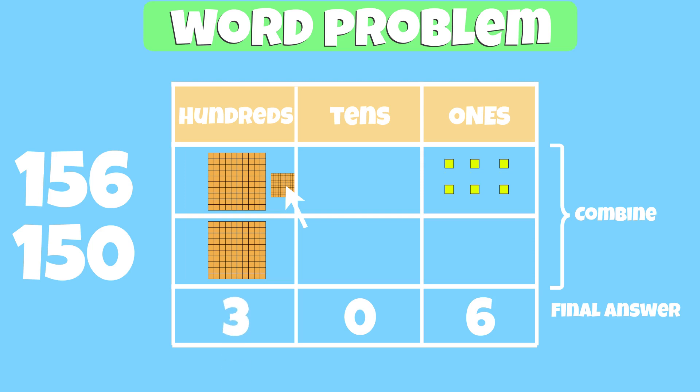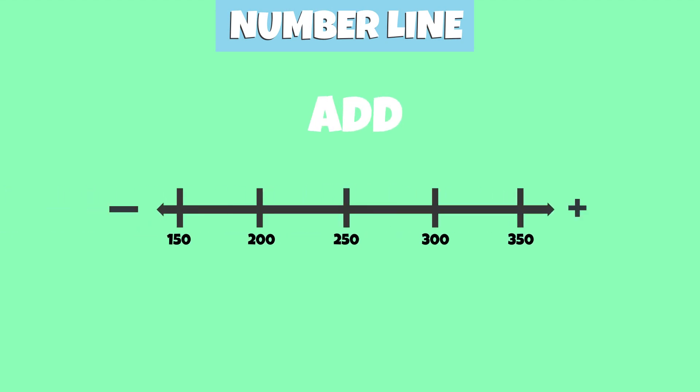We can also represent the addition of these two numbers using a number line. When we add positive numbers, we move to the right of the number line.